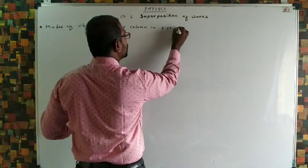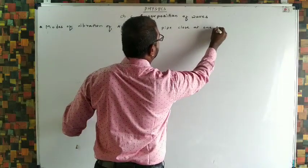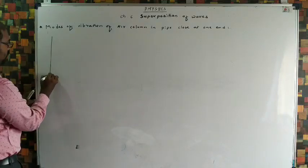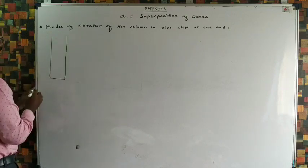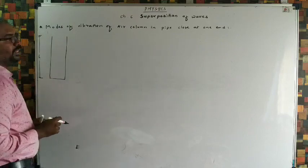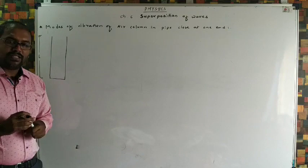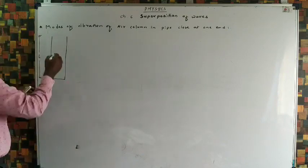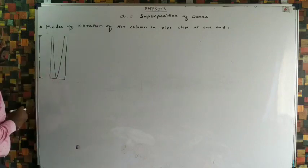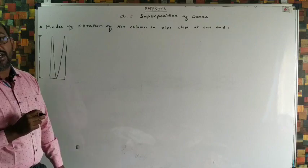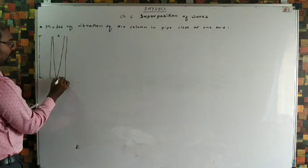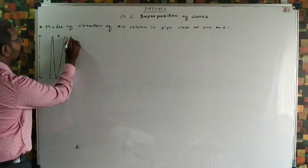First we learn modes of vibration of air column in a pipe closed at one end. We consider a pipe which is closed at one end. Let me draw the diagram — this is a pipe closed at one end whose length is L. When we keep any sound-producing source above the pipe, the wave enters inside, reflects, and we get a stationary wave. This stationary wave is longitudinal in nature. At the open end an antinode is formed and at the closed end a node is formed. The distance between antinode and node is λ/4, so this distance is λ/4.